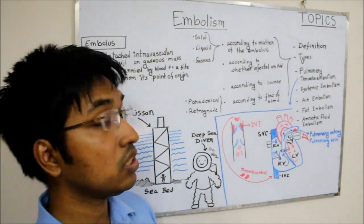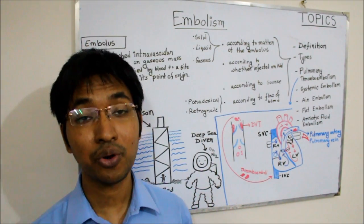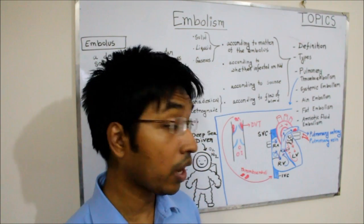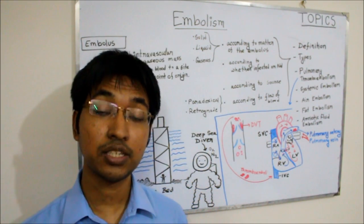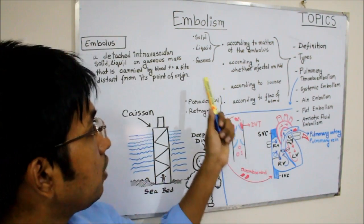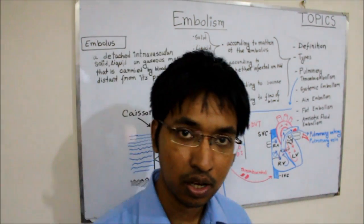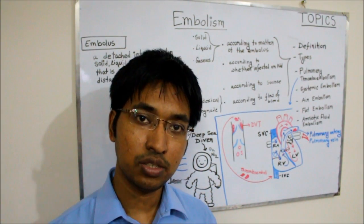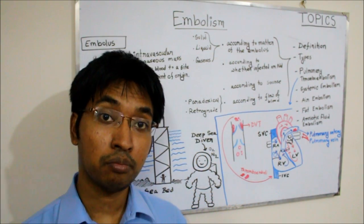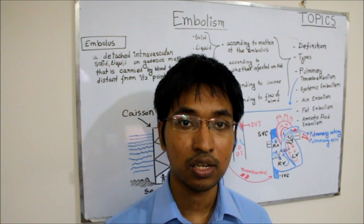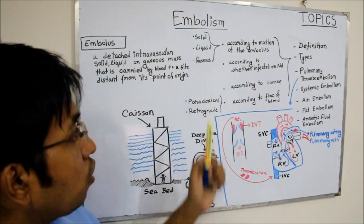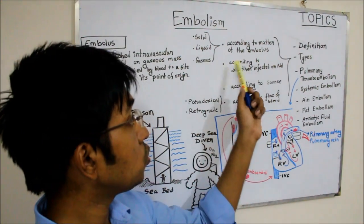Examples of liquid embolus include amniotic fluid embolus, fat embolism, and bone marrow embolism. The third type according to matter is gaseous emboli — particularly important here is air embolism. Nitrogen, oxygen, and all the gases of air can form bubbles that can occlude different blood vessels. We will talk about those things in the later half of today's video.